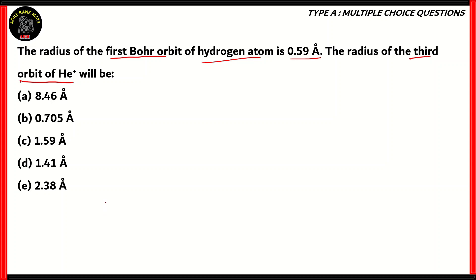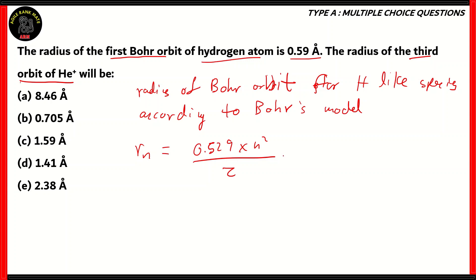How do we solve this question? In order to look at the question, we need to understand the radius of the Bohr orbit. When it comes to the Bohr's model of the atom, it is always for hydrogen-like species. The reason being that Bohr's model is only applicable to a single electron atom. The radius's formula is 0.529 times n squared over z angstroms.